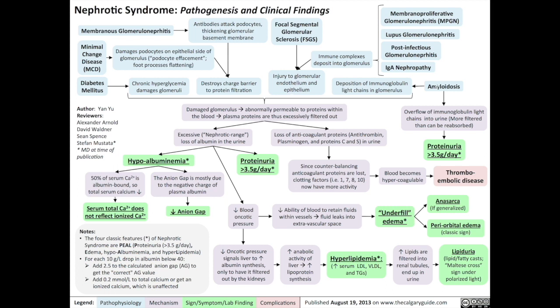Finally, amyloidosis — a disease involving deposition of immunoglobulin light chains. When those light chains deposit into the glomerulus, that damages the glomerulus. Simultaneously, amyloidosis results in more immunoglobulin light chains being filtered into the urine than can be reabsorbed, causing an overflow proteinuria of greater than 3.5 grams per day. Remember that immunoglobulin light chains are just a type of protein.